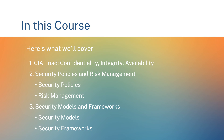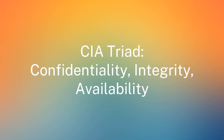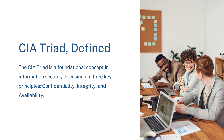In this session, we will concentrate on the CIA Triad — Confidentiality, Integrity, and Availability — in the fundamentals of information security. Let us start by definition. The CIA Triad is a foundational concept in information security, focusing on three key principles: confidentiality, integrity, and availability. Here's a brief overview of each.